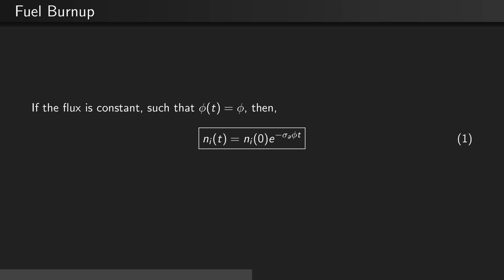If the flux happens to be constant such that the flux at time t is just equal to some value for the flux, then the integral goes away and we're left with the concentration at some time t in the future equal to the initial concentration times e to the negative sigma A phi t. This can be seen in the following equation.